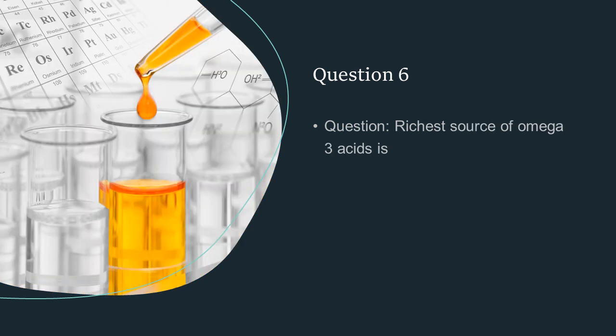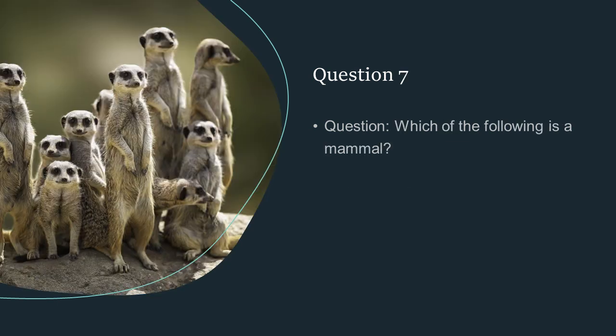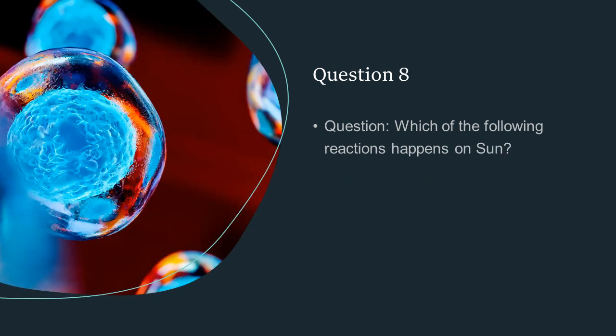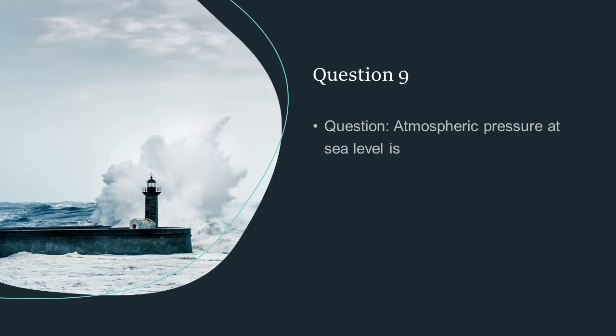Richest source of omega 3 acids is fish oil. Which of the following is a mammal? Whales and dolphins. Which of the following reactions happens on sun? Nuclear fusion of hydrogen into helium. Atmospheric pressure at sea level is 1013.25 millibars.